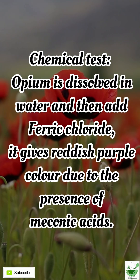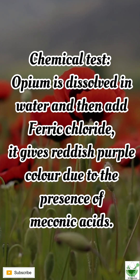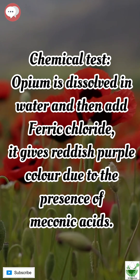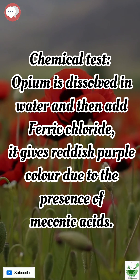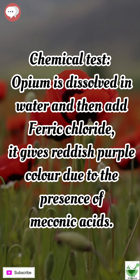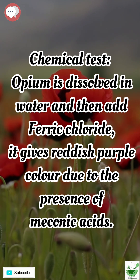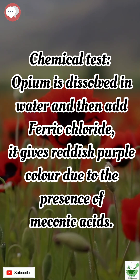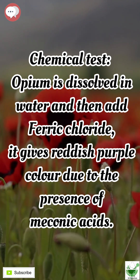Chemical test: opium is dissolved in water and then add ferric chloride. It gives a reddish purple color due to the presence of meconic acid.